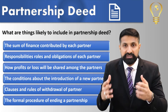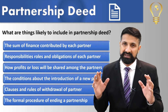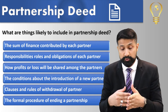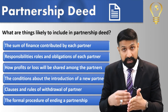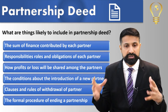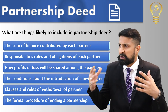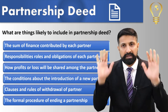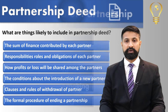Partnership deed میں clauses and rules of withdrawal of a partner بھی mention ہوتے ہیں — اگر کوئی partner کہے کہ میں اپنی investment واپس لینا چاہتا ہوں تو کیا rules ہوں گے، کتنا percent withdraw کرے گا، goodwill رہے گی یا نہیں۔ اس کے علاوہ formal procedures of ending partnership بھی mention ہوتی ہیں — اگر آپس میں نہیں بنی یا business end کرنا ہو تو کیسے end کرنا ہے، یہ سب partnership deed میں ہوتا ہے۔